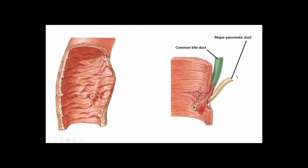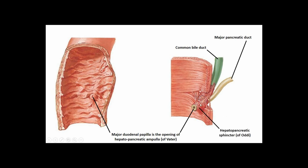In close-up view, the common bile duct and major pancreatic duct fuse and open into the duodenum at the major duodenal papilla — that small bump. The hepatopancreatic ampulla of Vater is the actual space where they fuse, surrounded by the hepatopancreatic sphincter, also known as the sphincter of Oddi, which constricts to allow bile to back up into the common bile duct and hold pancreatic secretions until the intestines are ready. There's sometimes a minor pancreatic duct opening into a minor duodenal papilla, but it may or may not be present.